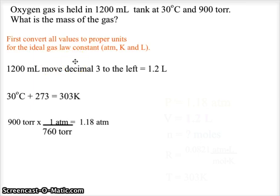So let's go ahead and look at another sample. Here we have oxygen gas held in a 1200 milliliter tank at 30 degrees Celsius and 900 torr. Because we are using the gas law constant, we must convert the milliliters to liters, so we move the decimal 3 to the left and get 1.2 liters.